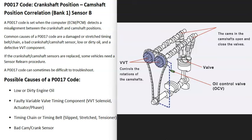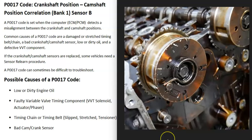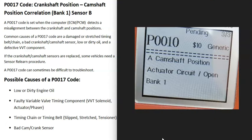The next possible cause is an issue with the variable valve timing system. Depending on the vehicle, VVT can be designed differently, but generally you'll have a solenoid — sometimes called the oil control valve — and an actuator, sometimes called a phaser. These components work together to adjust timing at different RPMs for more power or better fuel economy. If one fails, it can throw off the timing. A related code like P0010 (camshaft position actuator circuit open, bank one) may also appear.